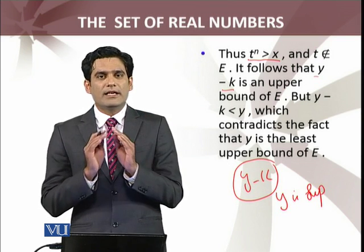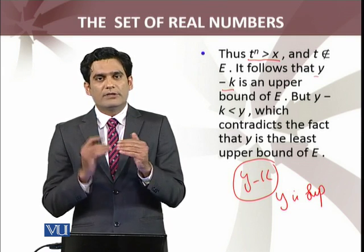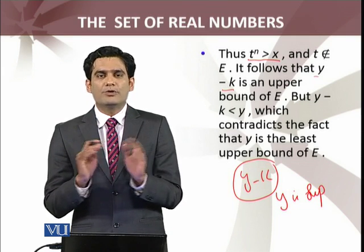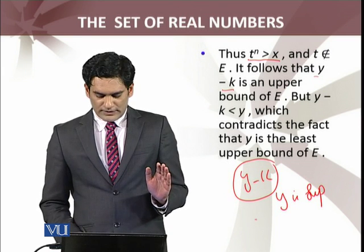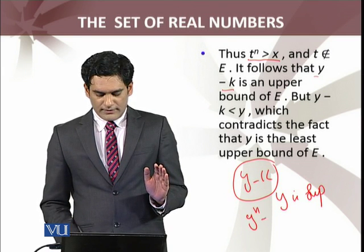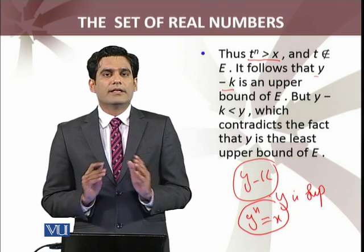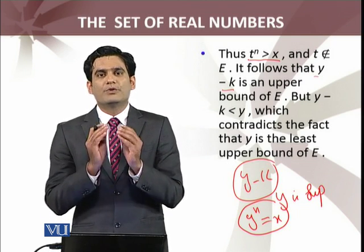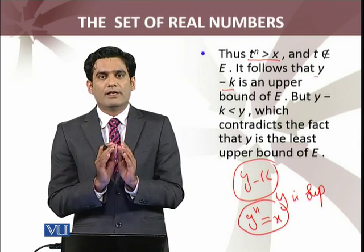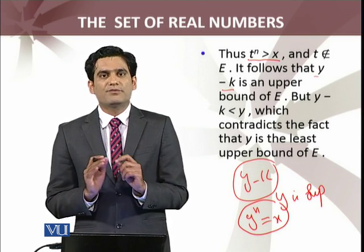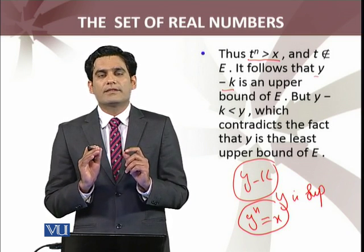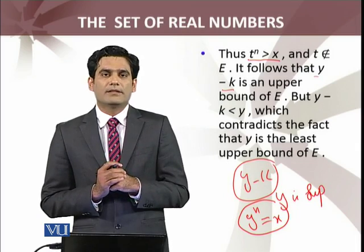Since the set of real numbers is an ordered field, there are only three possibilities. Two have been shown to lead to contradictions. So the third possibility, which is y^n = x, is true. This is what we needed to prove. The uniqueness of y, which satisfies this equation y^n = x, has already been discussed earlier.